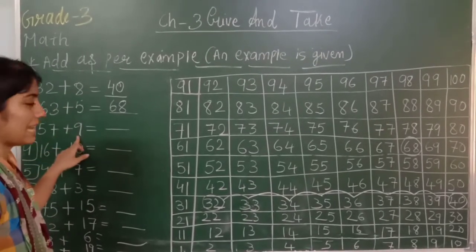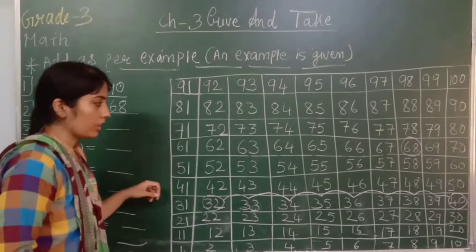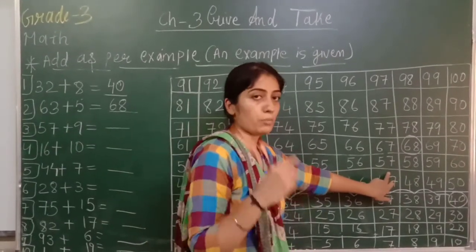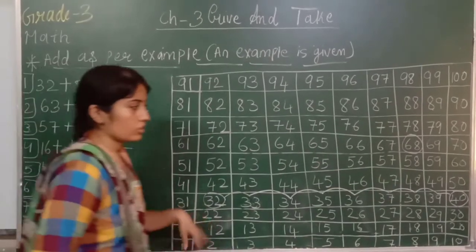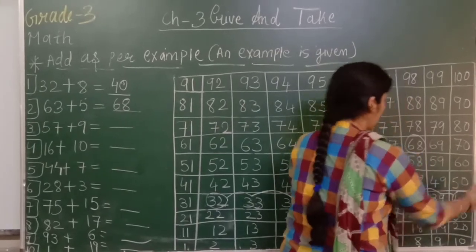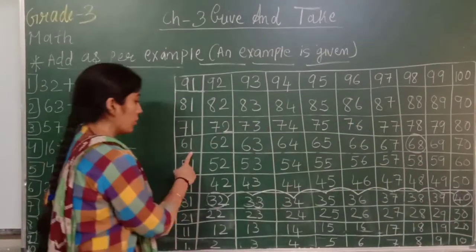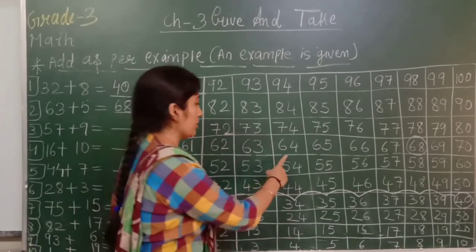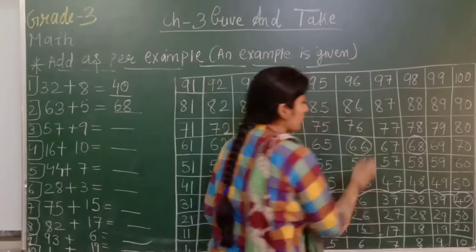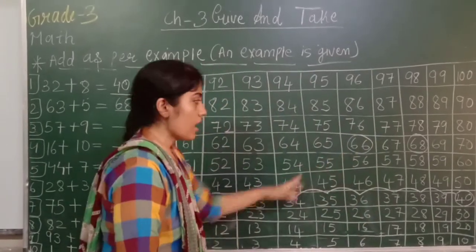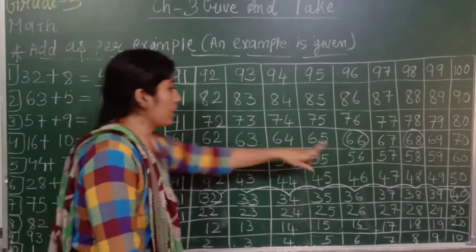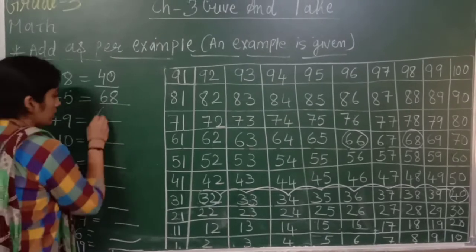Next: 57 plus 9. Where is 57? Here. 57 pe khaade hoke, humko kitne steps chalna hai? 9. One, two, three, four, five, six, seven, eight, nine. Answer is 66. Hum ne 57 plus 9 kiya, toh answer kya hai? 66. Toh yahaan likhenge 66.